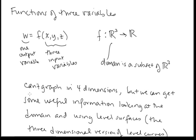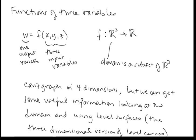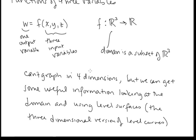Now let's take a look at functions of three variables. We can say w = f(x, y, z), where f takes three-dimensional space into one-dimensional space — from R³ to R. The domain of this function is some subset of three-dimensional space. Since we can't graph in four dimensions, we can't sketch graphs of these functions, but we can sketch the domain in three-dimensional space.